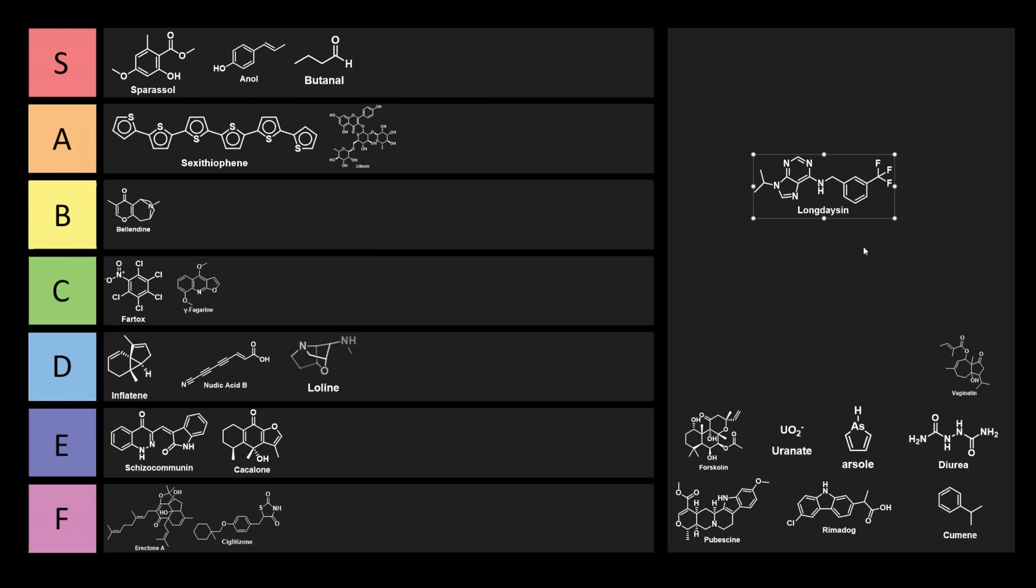This one's kind of cool. This is called longdason. I would say that this molecule probably belongs in F tier, because it's not an unfortunate name. In fact, it's an incredibly fortunate name. It was named after what it does. Longdason gets this name, because it lengthens the circadian rhythm in mammals when administered. So this will lengthen the circadian rhythm. This will increase the length of your day, because it affects the circadian rhythm.